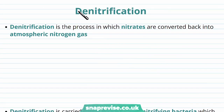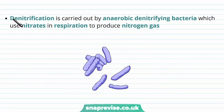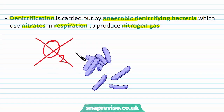Finally, we have the process of denitrification. In denitrification, we have a process where the nitrates are converted back into atmospheric nitrogen gas. The nitrates, NO3-, get turned back into the form nitrogen exists as in the atmosphere, which is N2. The denitrification process is carried out by anaerobic denitrifying bacteria. These bacteria use the nitrates in respiration to make nitrogen gas, but they're anaerobic, so they do not need the presence of oxygen — in fact, they require the absence of oxygen to do this.